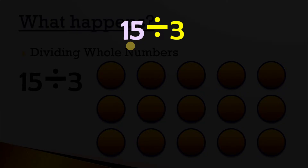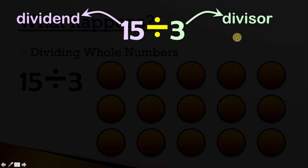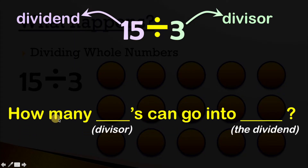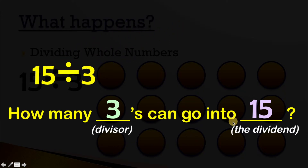This 15 here is called the dividend — it's what you're actually dividing or splitting up. And this here is called the divisor, which is exactly how you're splitting up the dividend. There are tons of ways to word it, but we're going to use one specific sentence to make division a little bit simpler: how many divisors can go into the dividend? So in this example, when we have 15 divided by 3, we're really asking how many threes can go into 15.